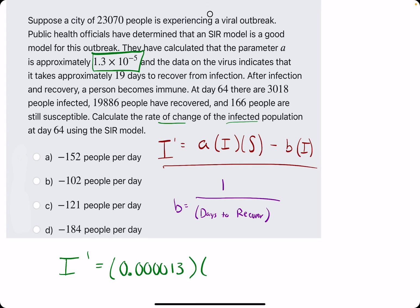Our I value is the number of infected, which is given here. They say 3,018 people are infected. We need the number susceptible, which they give us as 166 people are still susceptible.